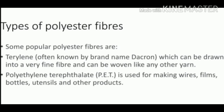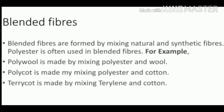Polyester synthetic fiber can also be mixed with natural fiber to get a variety of different fibers — these are called blended fibers. Do you know what is meant by blended fiber? These are formed by mixing natural as well as synthetic fibers. For example, poly-wool is made by mixing polyester and wool, polycot is made by mixing polyester and cotton, and terricot is the mixing of terylene and cotton.